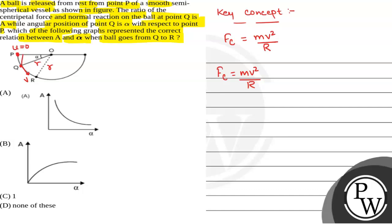We can see if the radius of the semi-spherical vessel is R, this distance that is the vertical height from P to Q, that will be H, that will be R sine alpha. If we conserve energy from point P to Q, conserving mechanical energy from point P to Q.